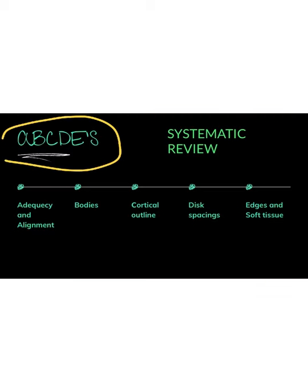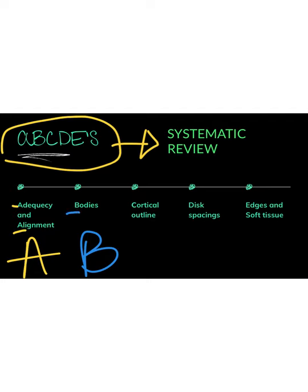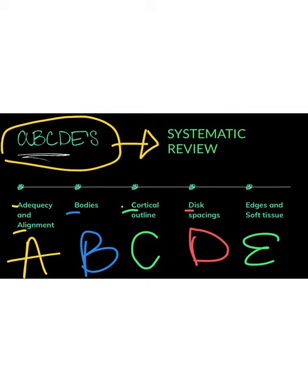We use the ABCDE approach to systematically review our c-spine x-ray. A: Am I adequately seeing all the relevant structures? The second A is alignment — all lines should be uninterrupted within the c-spine x-ray. B: Bodies — we're looking for any deformity in the vertebral bodies. C: Cortical outlines — looking for any fractures. D: Disc spacing — looking for any irregularities indicating herniation. E: Edges and soft tissues — looking for surrounding fractures as well as soft tissue injuries.